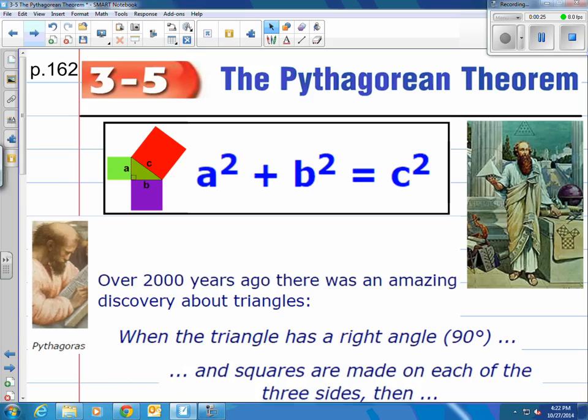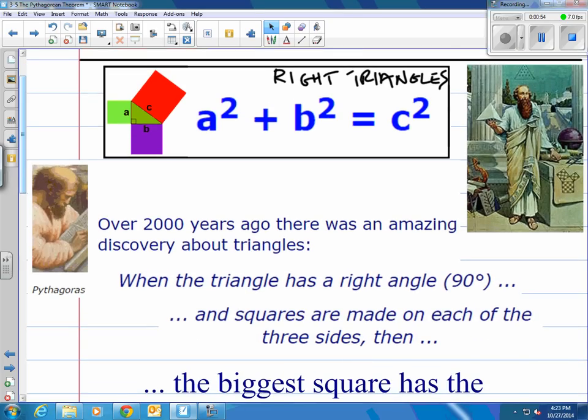Well here we are, the Pythagorean Theorem, one of the more famous math equations in history. It's credited to Pythagoras and it's given right there a² + b² = c² and it only works with right triangles. Now you're asking yourself what exactly is all that? Well here it comes. It says over 2,000 years ago there was an amazing discovery about triangles and there's Pythagoras, he's credited with this.